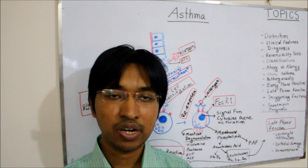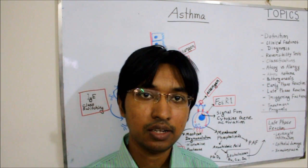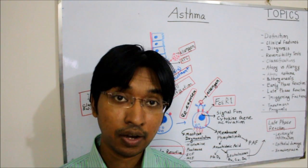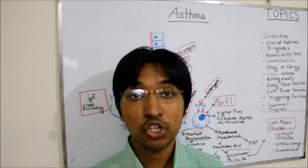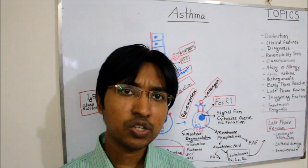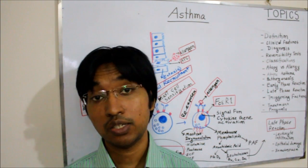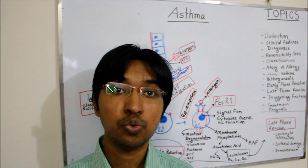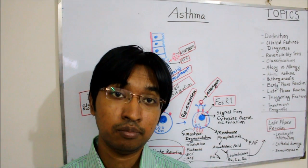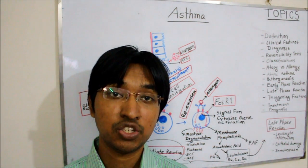Asthma symptoms can occur in a variety of patterns: episodic, frequent episodic, and persistent. In the episodic type, attacks are occasional and well-defined, lasting hours to days with no symptoms in between. In the frequent episodic type, attacks are more frequent and exacerbations last longer, usually days to weeks. In the persistent variety, the patient has symptoms continuously — there will be some symptoms even when the patient is apparently well.